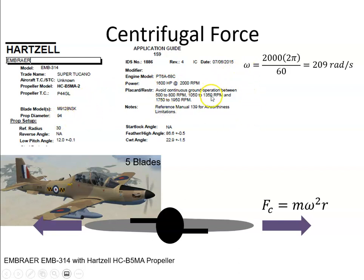2000 RPM equates to a rotational speed of 209 radians per second. To convert: 2000 revolutions per minute, divided by 60 gives revolutions per second, then multiplied by 2π gives 209 radians per second.